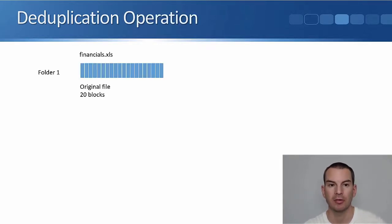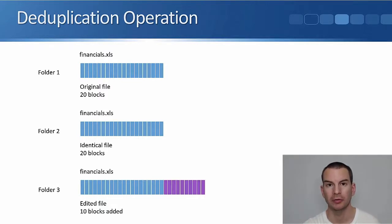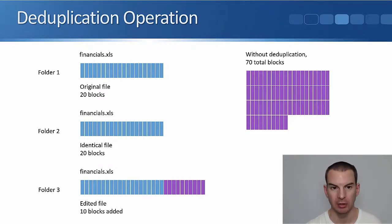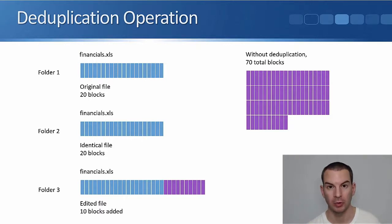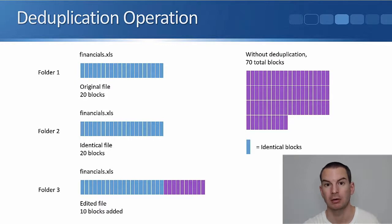Let's have a look at how deduplication works. Here I've got a file — financials.xls — and it is 20 blocks. I've got a copy in folder one, then I make a copy to folder two, then another copy in folder three where I make some edits and add 10 additional blocks. Without deduplication: the first copy is 20 blocks, the second copy another 20 blocks, the third copy the original 20 blocks plus the 10 added — that's 70 total blocks. But if we turn on deduplication, we can see how much space we save by looking at the identical blocks in the diagram.